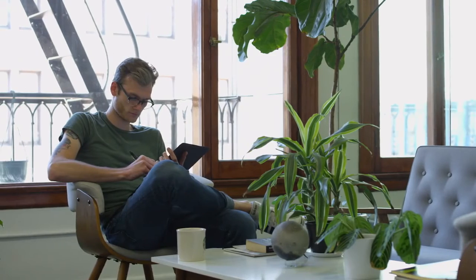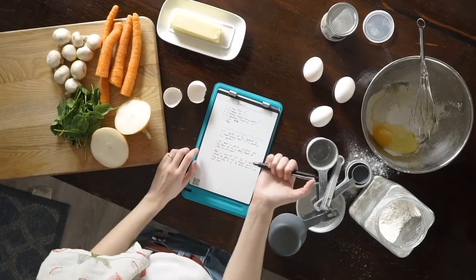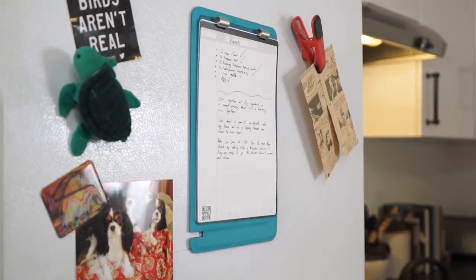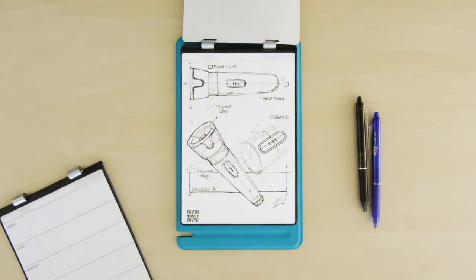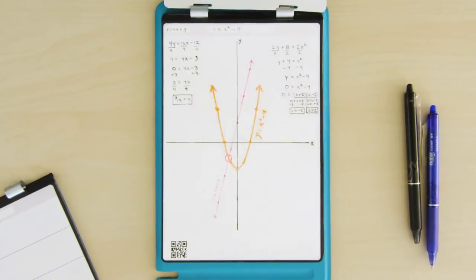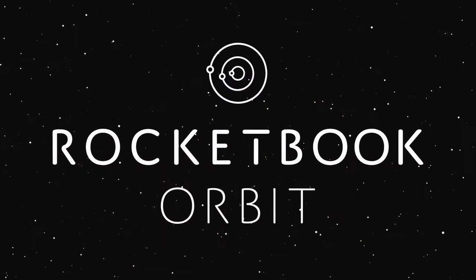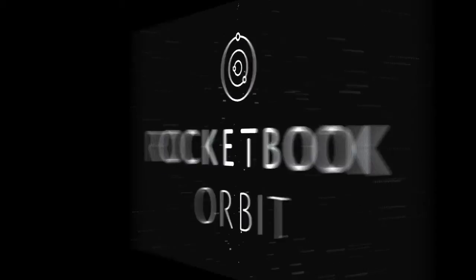Launch your next big idea with a blank sheet. With the Orbit you can flip the page to the digital age, the utility of the cloud and the joy of pen and paper. That's Rocketbook.